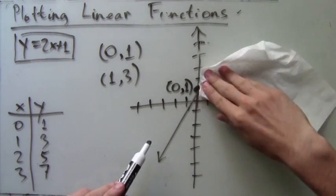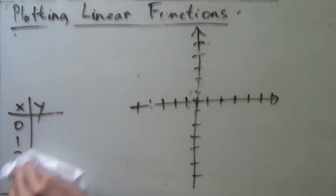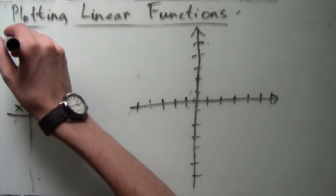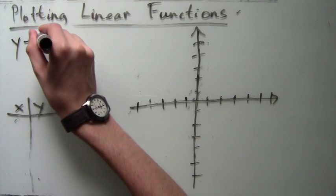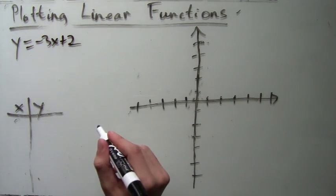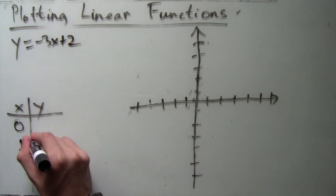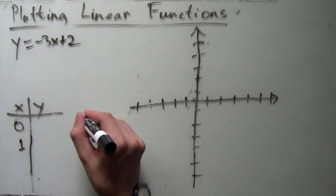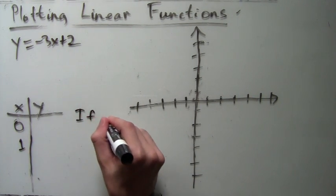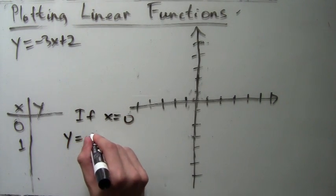Now I will clean up before the next example. Now we will graph the function y=-3x+2. We will again make a table of values for x and y, but now we will just take x equals 0 and x equals 1 because we know we only need two points to graph a line.